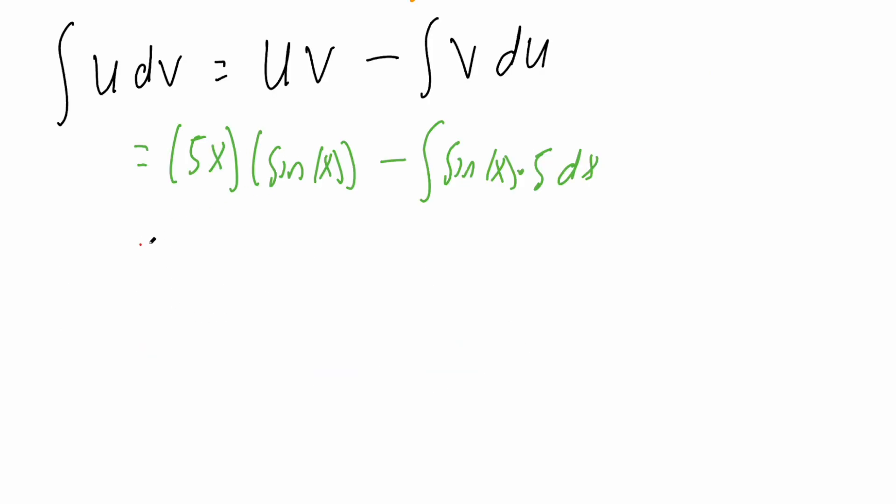This piece is already set up: we get 5x sine x. Here we can move the 5 in front, getting negative 5 times the integral of sine x dx.